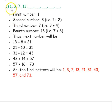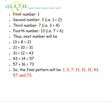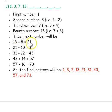Next pattern: 1, 3, 7, 13. First number is 1, second is 3. If you add 2 to 1 you get 3. After 3 you have 7, so if you add 4 to 3 you get 7. Next number is 13: if you add 6 to 7 you get 13. So we have added 2, 4, 6 — next we add 8: 13 plus 8 is 21.